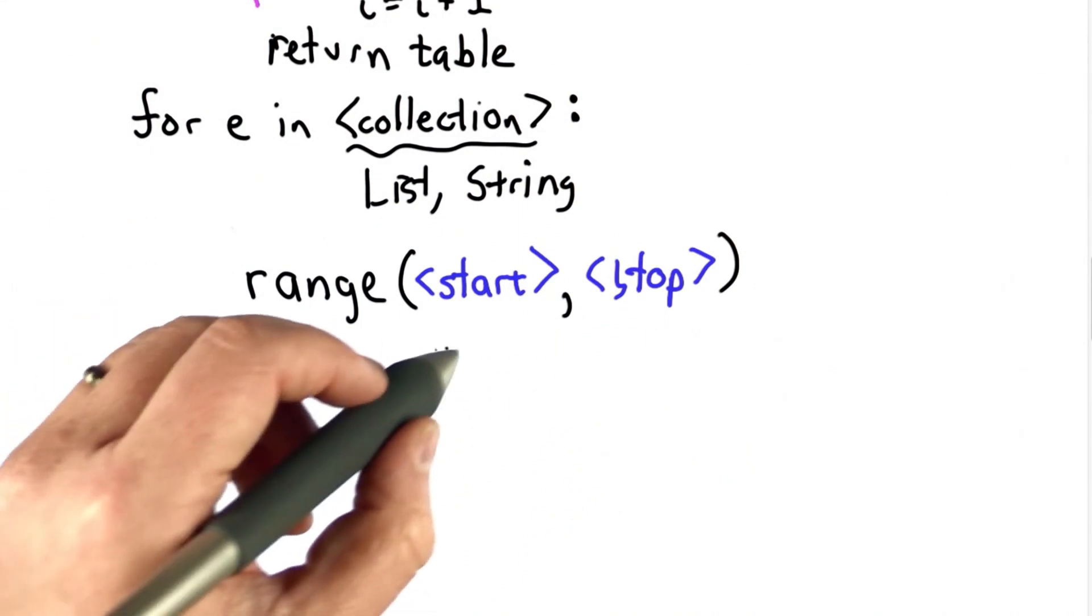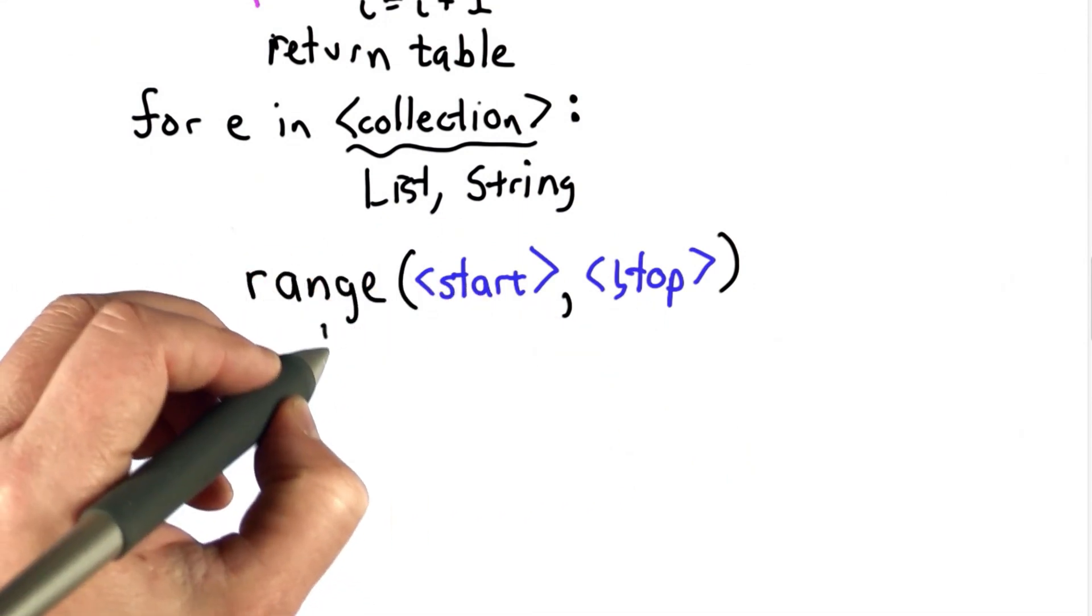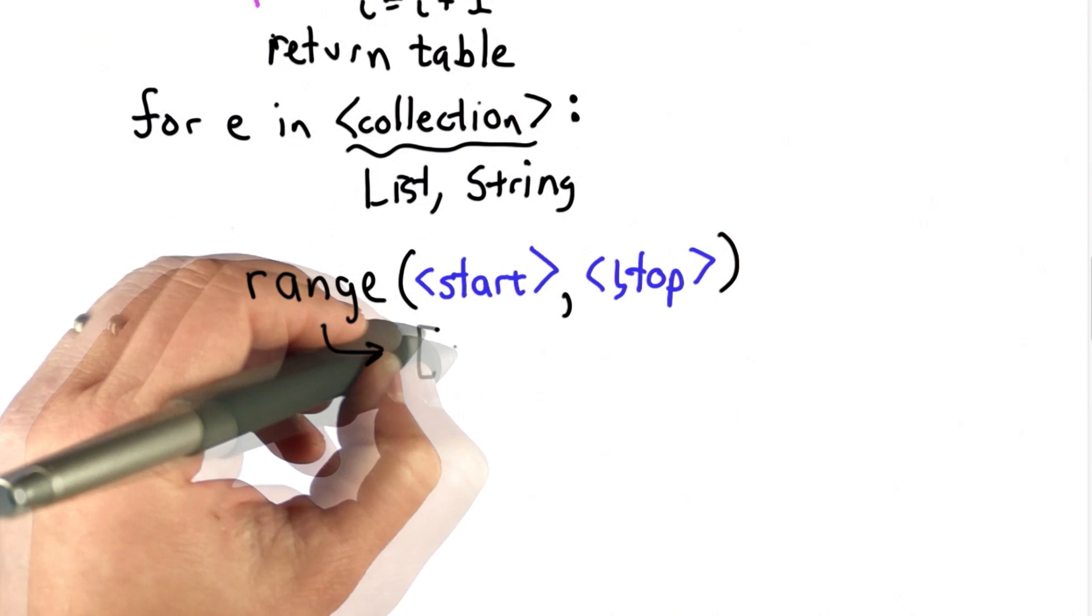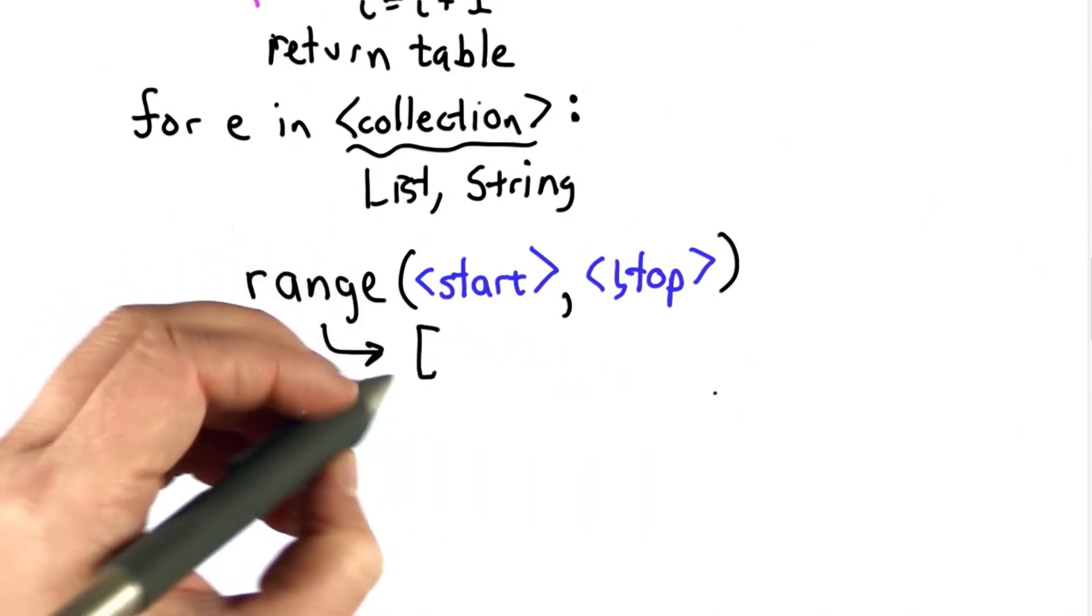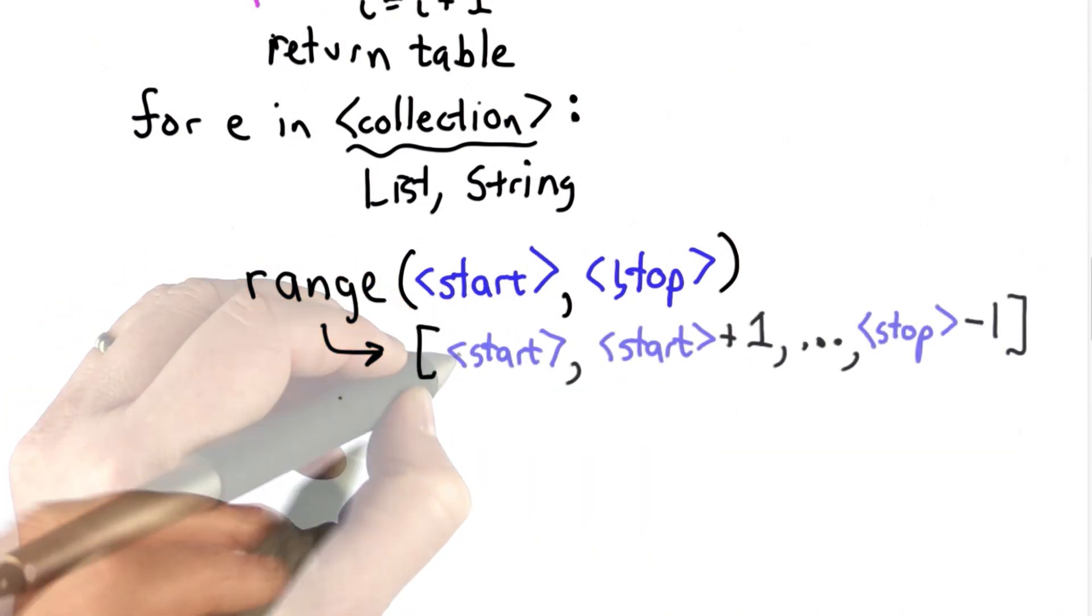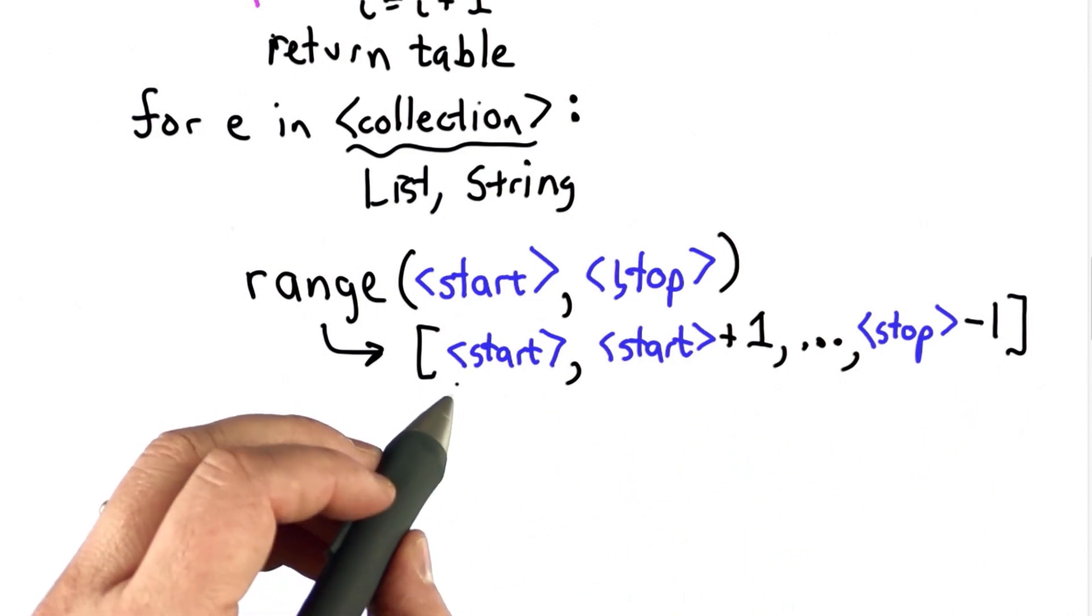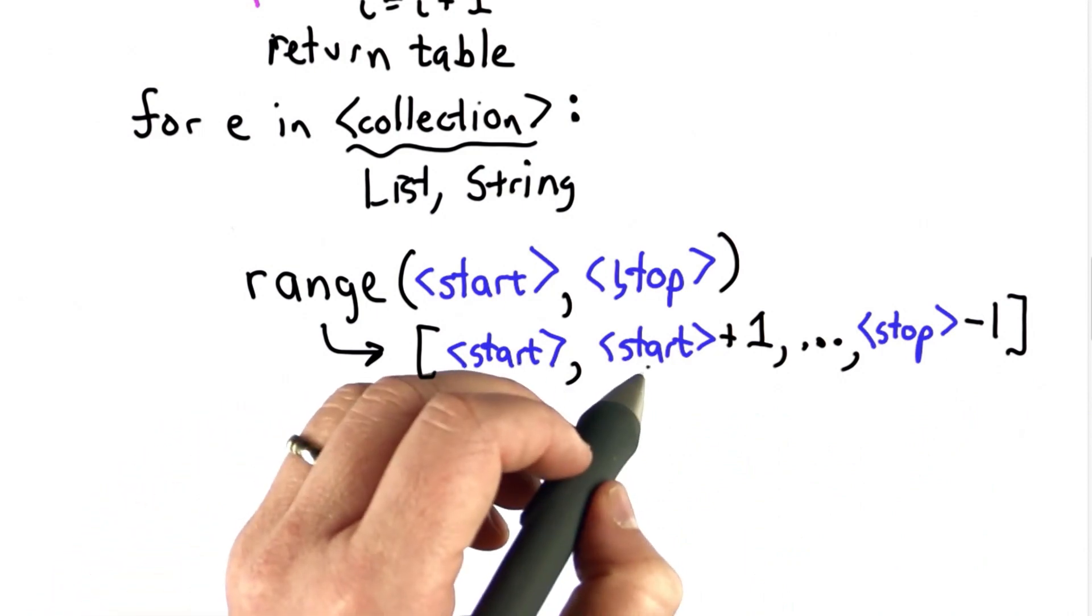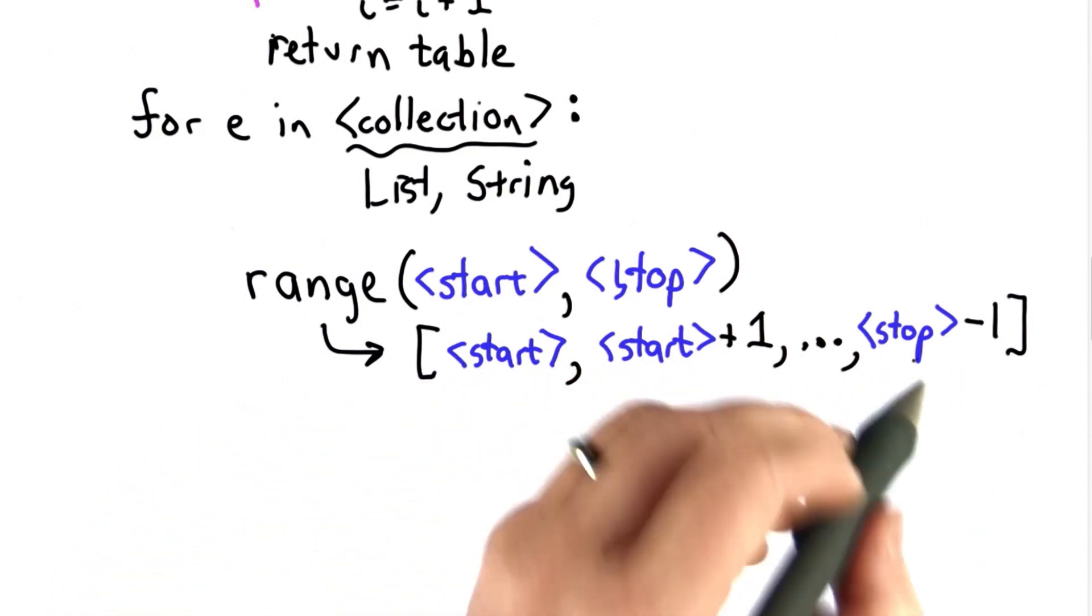So range takes two numbers as inputs, the start and the stop number. And what it outputs is a list of all the numbers from start up to stop minus 1. So this is what range outputs, a list of numbers starting from start, increasing by 1 until we get to stop minus 1.